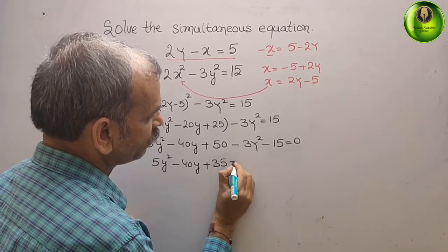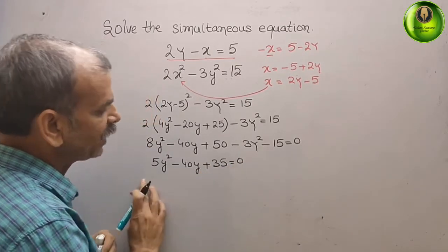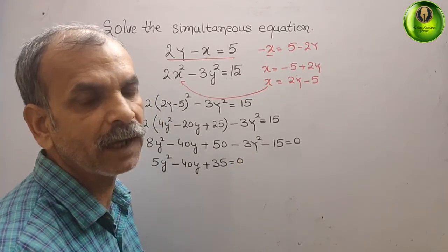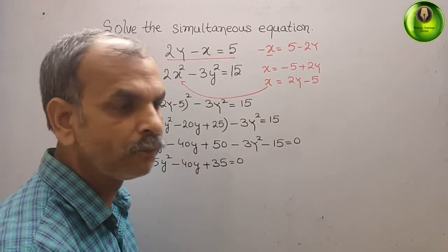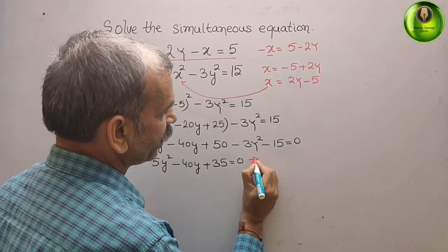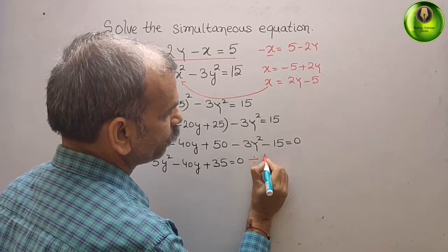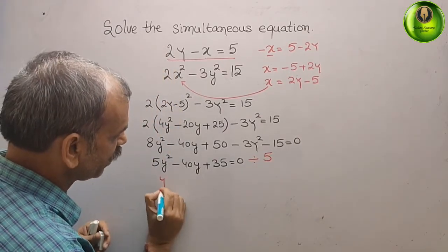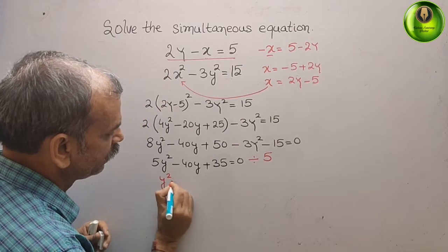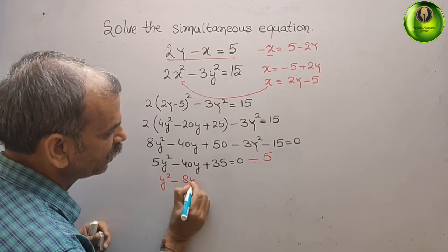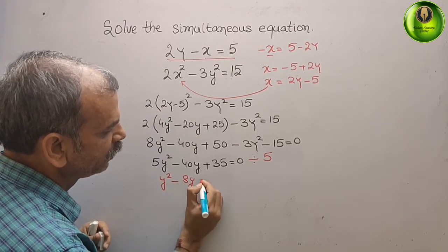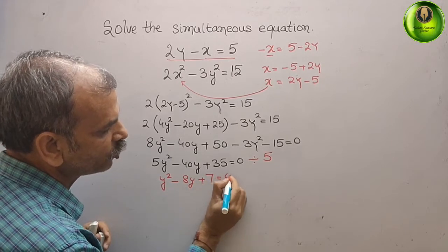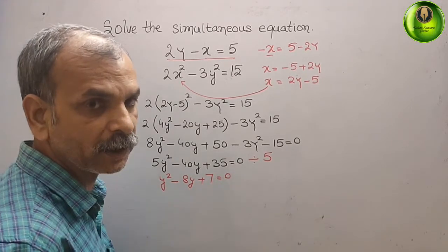We can see every term is divisible by 5, so dividing by 5 gives y squared minus 8y plus 7 equals 0.